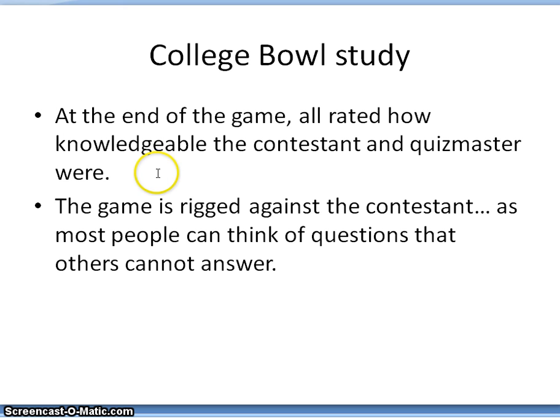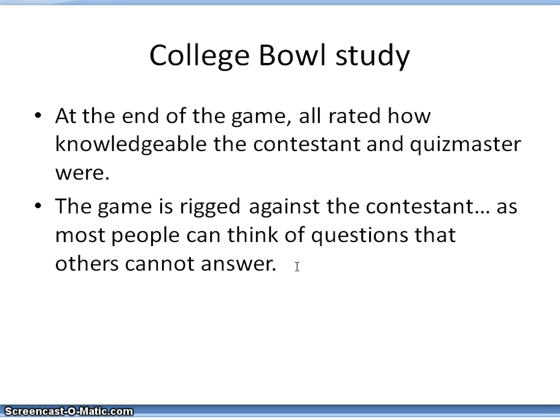Intelligence was one measure they were asked about — how intelligent did they think the contestant or the quiz master was. The game is rigged against the contestant, because most people can think of questions that others cannot answer. The quiz masters get to come up with the questions, so of course they're going to choose questions they know the answers to, making the contestants look less knowledgeable. This is a situational factor giving an advantage to the quiz masters over the contestants.